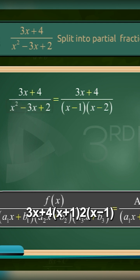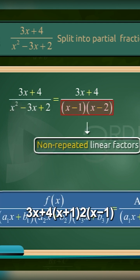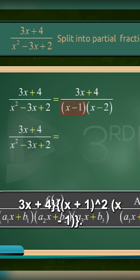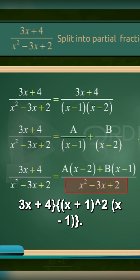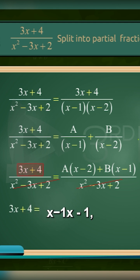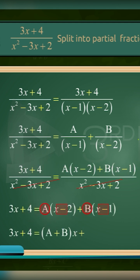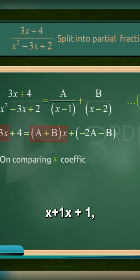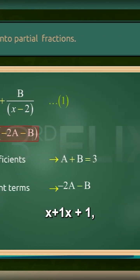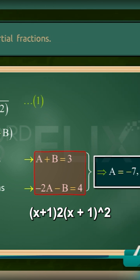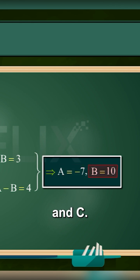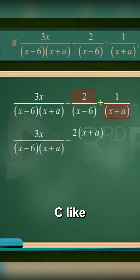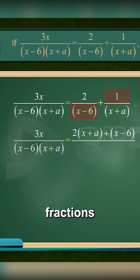Take this fraction. We write it as a sum of simpler parts, then solve for A, B, and C. Want to know how to solve for A, B, C like a pro? Click below and master partial fractions now.